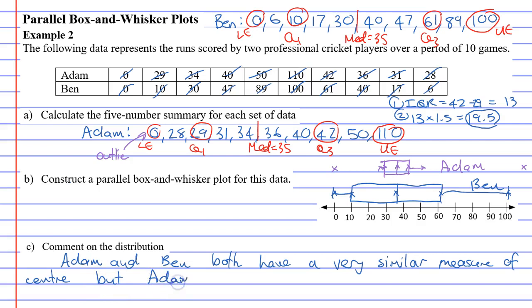But, Adam is a more consistent player. Why do we say that? And the reason we know this is, when data is grouped close together, it means they are more consistent. Adam consistently gets a score around about the 35 mark. A manager knows that if he puts Adam out there, he's going to get close to 35 runs most of the time.